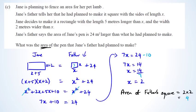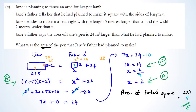Checking: x = 2 means father's area = 2² = 4, plus 24 = 28. Jane's rectangle: base 2 + 5 = 7, height 2 + 2 = 4, area = 7 × 4 = 28. Confirmed. The correct solution of 4 m² is excellence. For achieved: setting up the equation earns achieved; simplifying to a linear equation earns achieved; solving the equation earns achieved. Getting two or more of these achieveds earns merit.